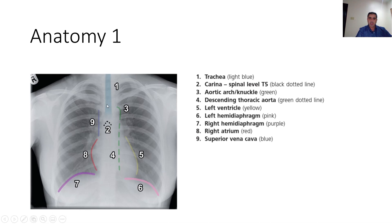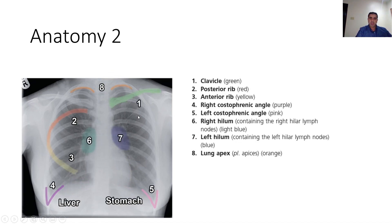Important anatomical landmarks that you should know include the trachea, then the carina which is at the level of T5, then the aortic arch and the descending aorta. The left border of the heart is composed mainly of the left ventricle. You should also know both right and left hemidiaphragm, and the right border composed mainly of the right atrium and the superior vena cava. Other important bony landmarks include the clavicles, the posterior ribs, and the anterior ribs.